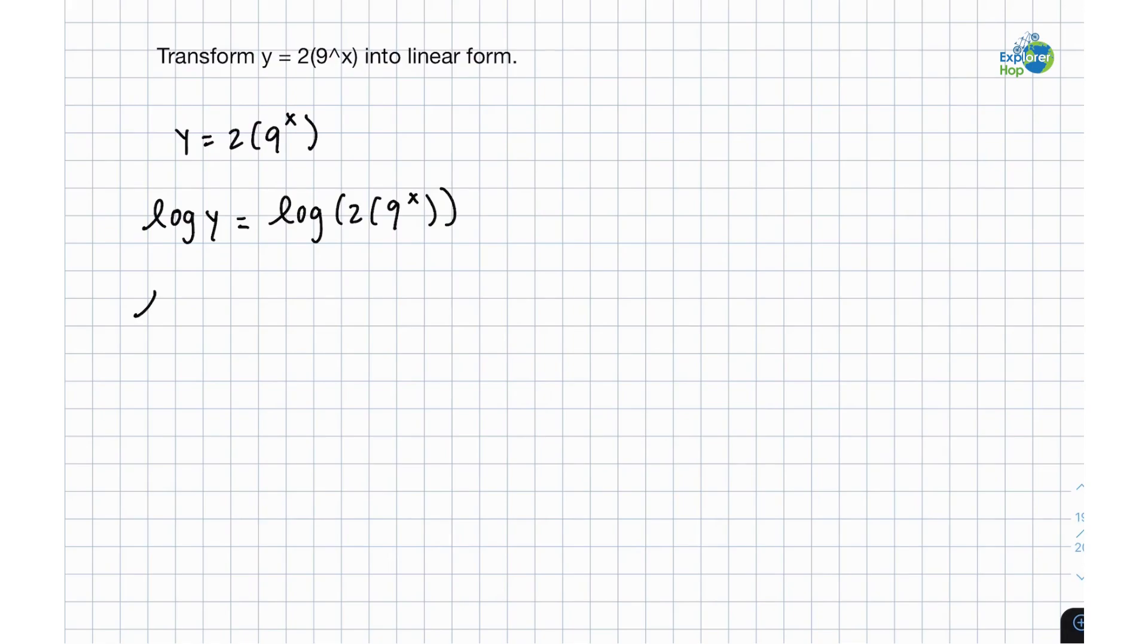Now because of the log rules, we know that log of 2 times 9 to the x is the same as log 2 plus log 9 to the x. And the rule that states this is log ab equals log a plus log b.